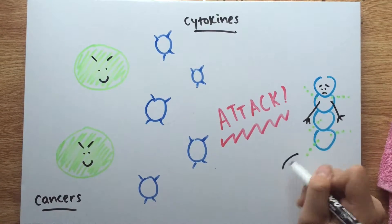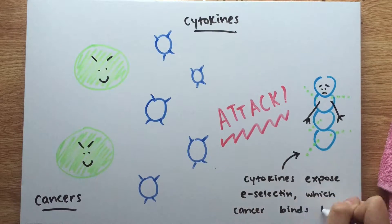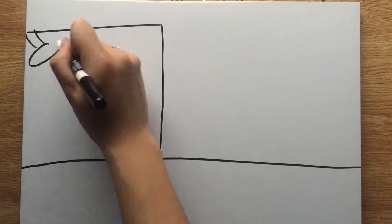Figuring out how to strengthen or regenerate the glycocalyx could pull things like diabetes, cancer, and heart disease right out from the root.